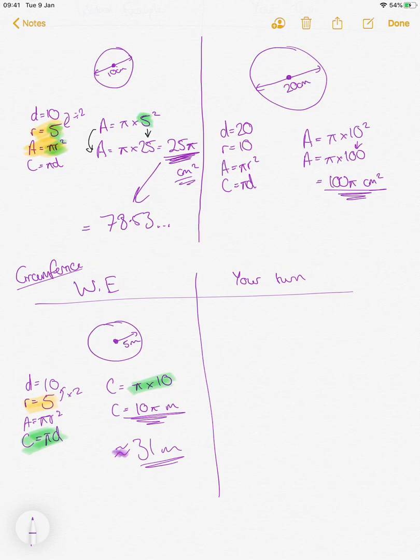The circumference is the distance from, say, I started here and walked all the way around it. Then that's my circumference. I'm saying that distance that I would walk is 31 metres. Your turn.